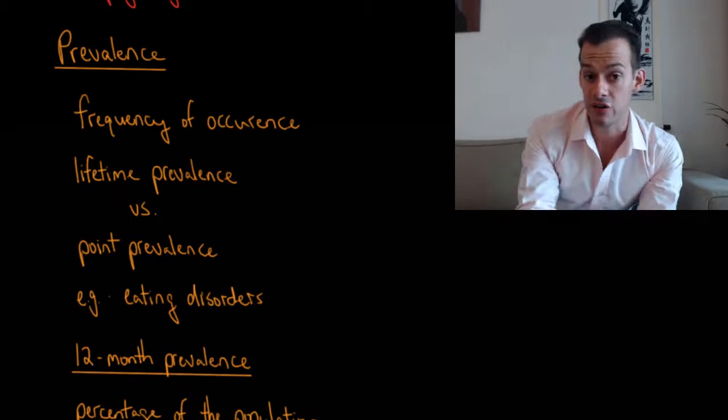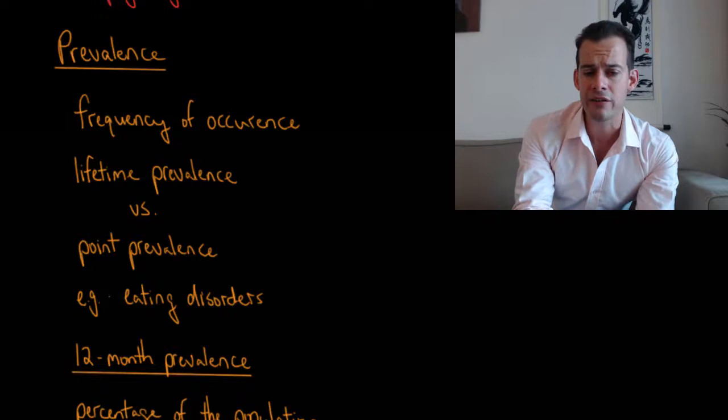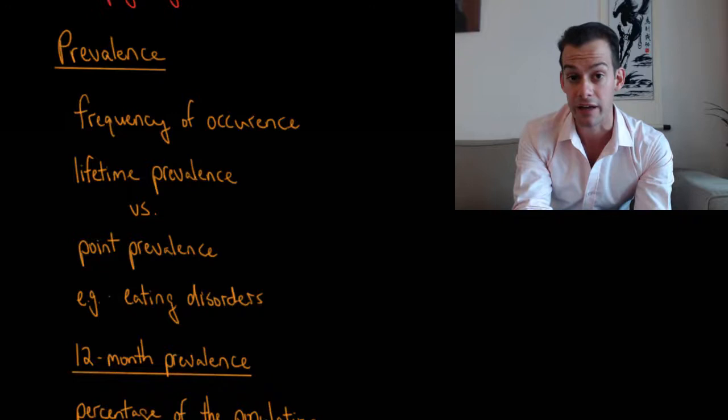Now in the DSM-5 we also have mention of the prevalence for each disorder. So what prevalence refers to is the frequency of occurrence of a disorder. And you can think about prevalence in different ways. There's different types of prevalence. We can talk about the lifetime prevalence and that refers to the frequency of occurrence over the course of a lifetime. Or we can talk about the point prevalence and that refers to the frequency of occurrence over a certain period of time like a year.